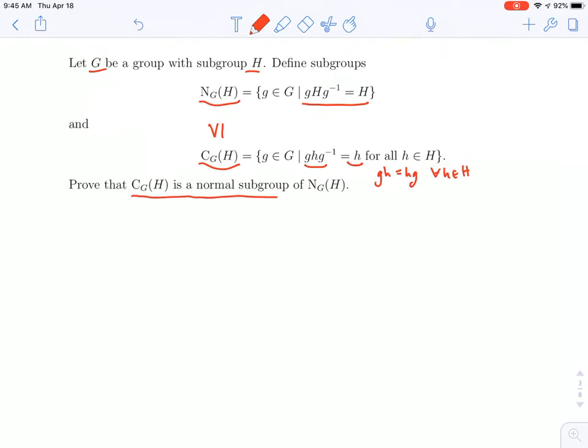This question is about showing that it's even a normal subgroup. The centralizer is normal in the normalizer. So how do we do that? To show something is normal, we can show that it's invariant under conjugation.